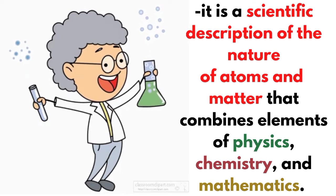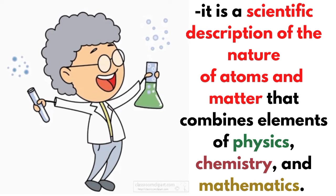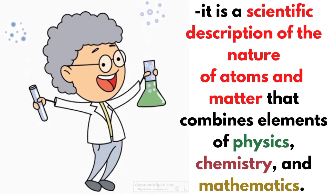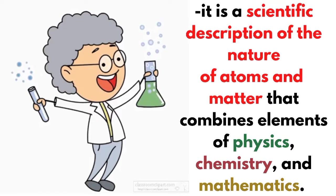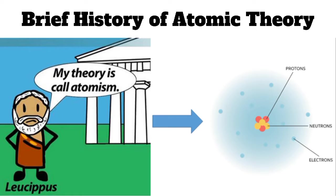It is a scientific description of the nature of atoms and matter that combines elements of physics, chemistry, and mathematics. According to modern theory, matter is made of tiny particles called atoms, which are in turn made up of subatomic particles. The theory has evolved over time, from the philosophy of atomism to modern quantum mechanics. Here's a brief history of atomic theory.